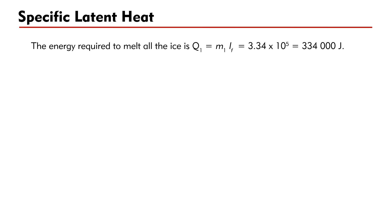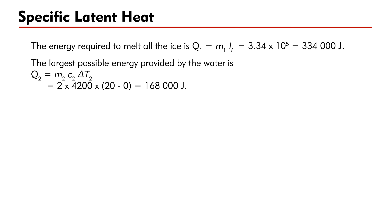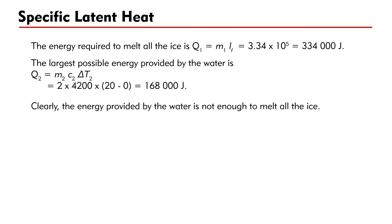The energy required to melt all the ice is Q₁ = M₁×L_F = 3.34×10⁵ = 334,000 J. The largest possible energy provided by the water is Q₂ = M₂×C₂×ΔT₂ = 2×4200×(20−0) = 168,000 J. Clearly, the energy provided by the water is not enough to melt all the ice, so the assumption was incorrect.